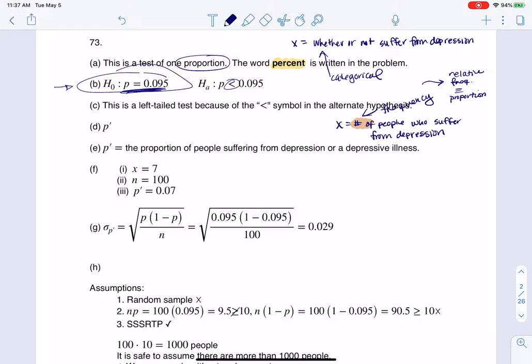And part C is asking, is this left-tailed, right-tailed, or two-tailed? Well, if you have a less than, I know we haven't gotten there yet, but when we draw the sampling distribution and we get our test statistic, whatever it is, I'm going to shade the left side of that. I'm always going to go less than it because my alternate is less than. So that's why I'm going to say I have a left-tailed test.